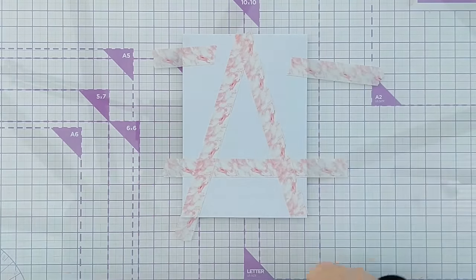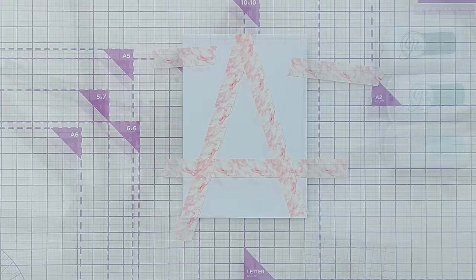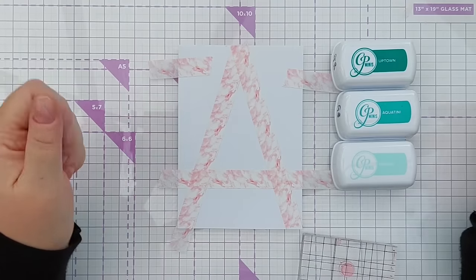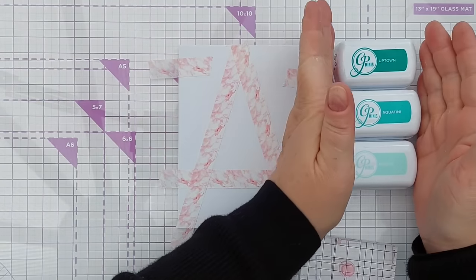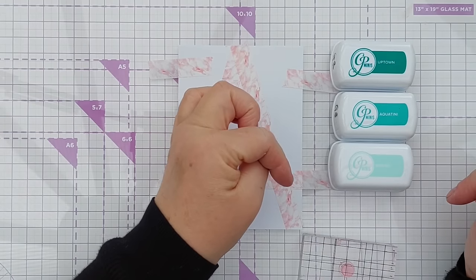So now I've got a triangle here which is going to form a Christmas tree. So for my Christmas tree I've chosen some green blue inks from the Catherine Pooler ink collection.